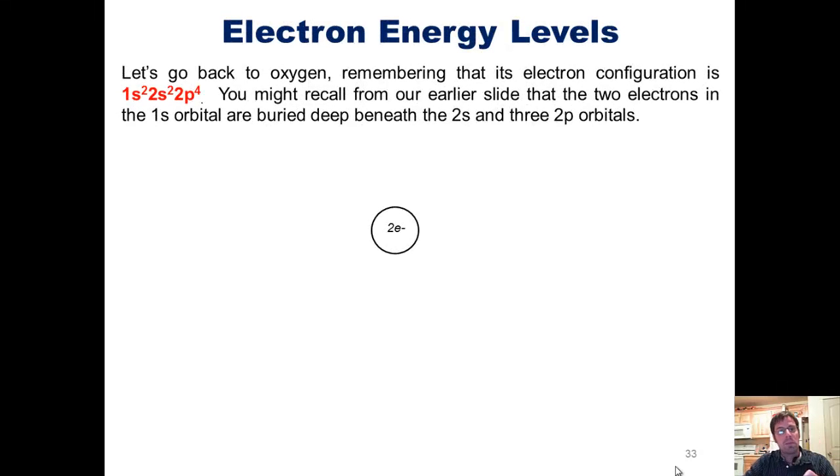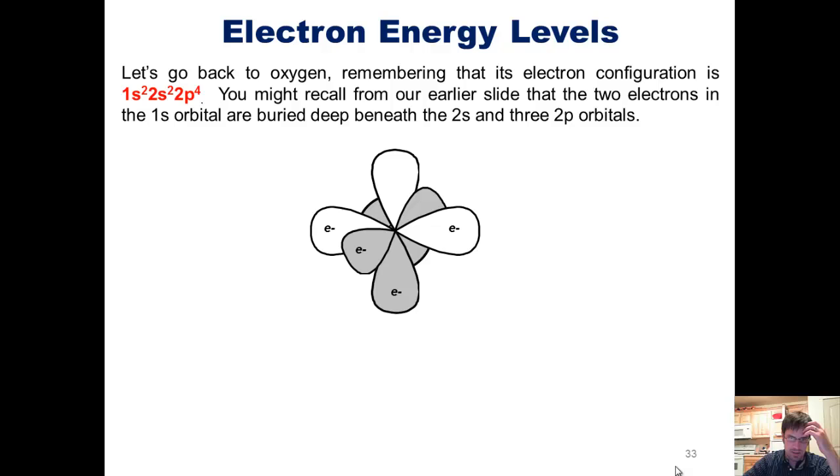We'll now go back to oxygen, remembering that its electron configuration is 1s2, 2s2, 2p4. You might recall from our earlier slide that the two electrons in the 1s orbital are buried deep beneath the 2s and three 2p orbitals, like this.